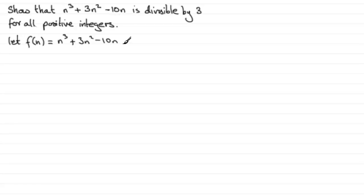If it's true for n equals k plus 1, then we know it must be true for all positive integers, because we would have proved it's true for n equals 1, so it must be true for n equals 2. And if true for n equals 2, it would be true for n equals 3, 4, 5, and so on.